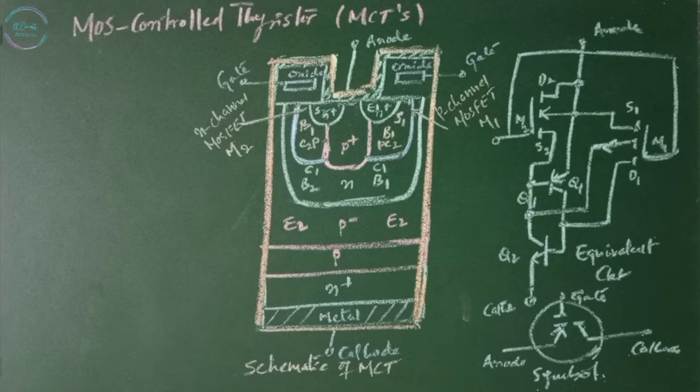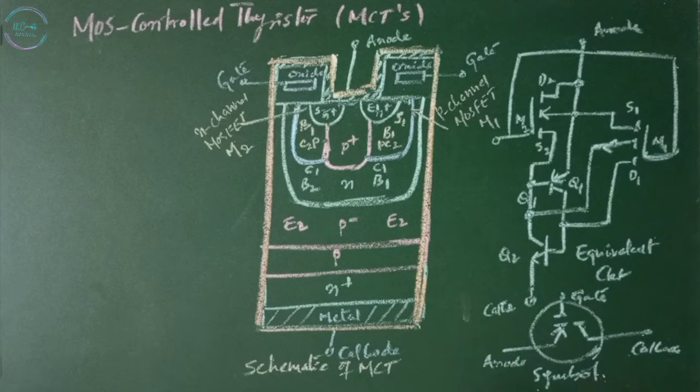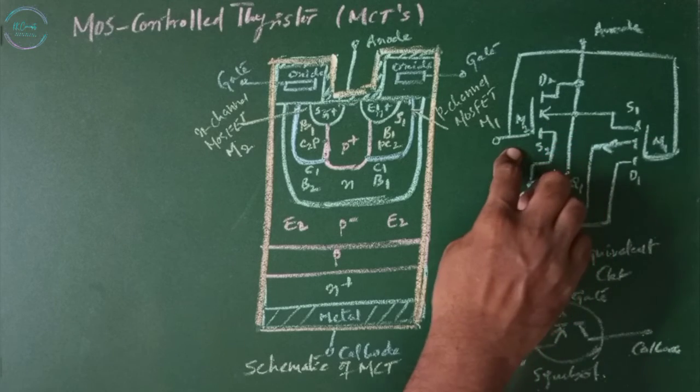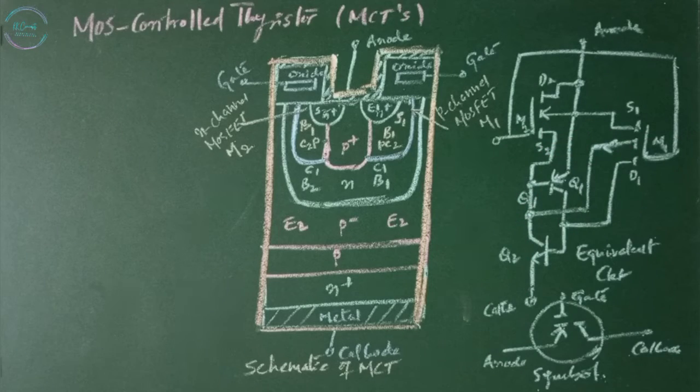A MOSFET controlled thyristor or MCT combines the features of regenerative four layer thyristor and MOSFET structure. This is the schematic of MCT and this is an equivalent circuit and this is the symbol. The NPNP structure may be represented by NPN transistor Q1 and PNP transistor Q2. The MOS gate structure can be represented by P-channel MOSFET M1 and N-channel MOSFET M2.